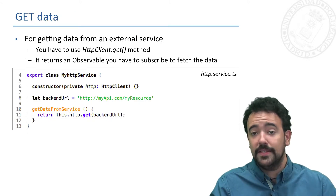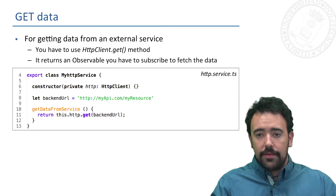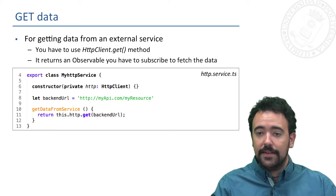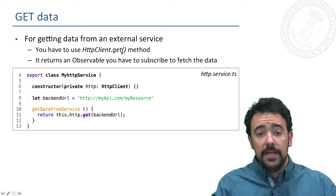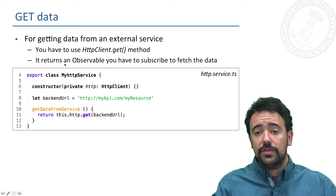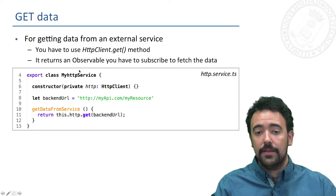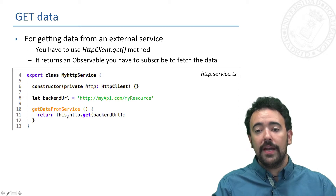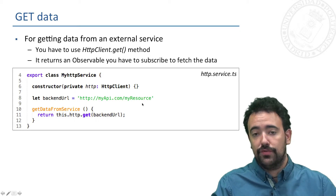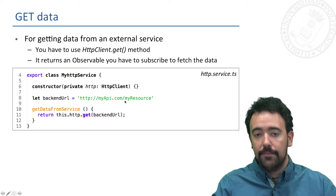Let's start with the basic method, which is GET. In order to get information from an external service we use the corresponding method HttpClient.get(), and this method returns an observable we can subscribe to in order to get the retrieved information. Here in our MyHttpService we inject the HTTP client and use the get method to retrieve a specific resource from a given URL.